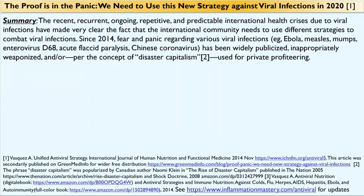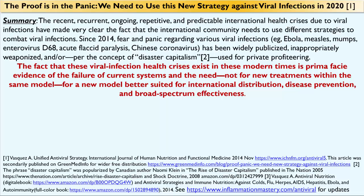In 2014, I published a small editorial titled 'The Proof is in the Panic: We Need a New Strategy Against Viral Infections.' The recent, recurrent, ongoing, repetitive, and predictable international health crises due to viral infections have made very clear that the international community needs to use different strategies to combat viral infections. Since 2014, fear and panic regarding various viral infections such as Ebola, measles, mumps, enterovirus, acute flaccid paralysis, and now the novel coronavirus has been widely publicized, inappropriately politicized and weaponized, and used for private profiteering. These viral infection health crises existing in modern times are prima facie evidence of the failure of current systems and the need for a new model better suited for international distribution, disease prevention, and broad-spectrum effectiveness.